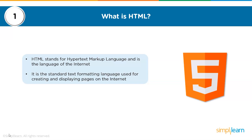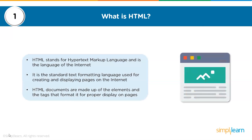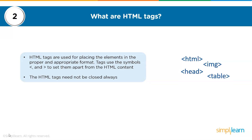Next question: what are HTML tags? HTML tags are used for placing elements in a proper and appropriate format. Tags use the symbols greater than and less than to set them apart from HTML content. HTML tags need not always be closed. For example, in the case of images, the closing tag is not required for an image tag.